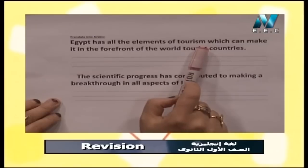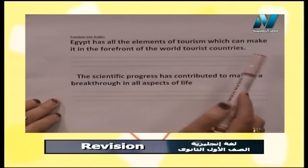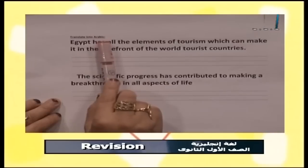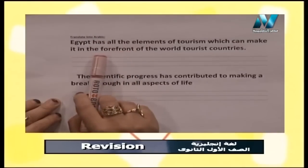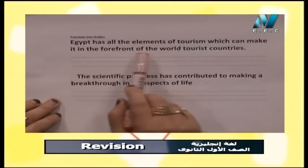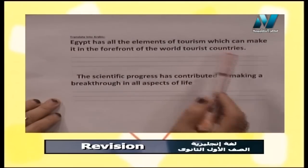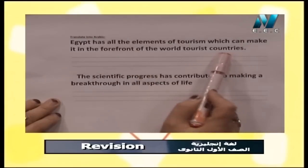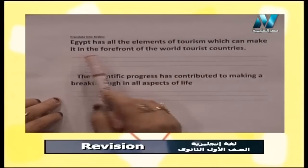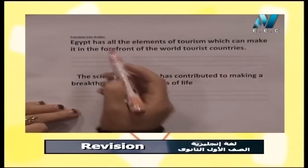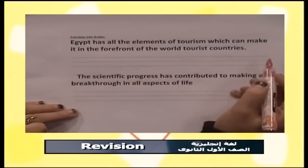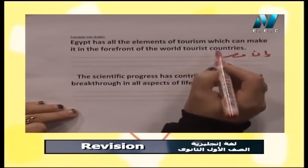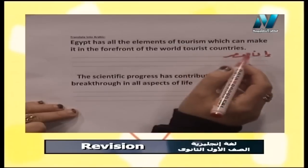Tourism اللي هي السياحة. كلمة front اللي هو الأمام، لما أقول forefront يبقى مقدمة. of the worldly tourist countries - زي ما اتفقنا بنترجم عكس الإنجلش فبنبدأ من آخر كلمة. مصر لديها أو تمتلك - ممكن أقول تمتلك أو عندها أو لديها. وممكن أديها روح العربي بأقول 'إن مصر لديها' في بداية الجملة للتأكيد.